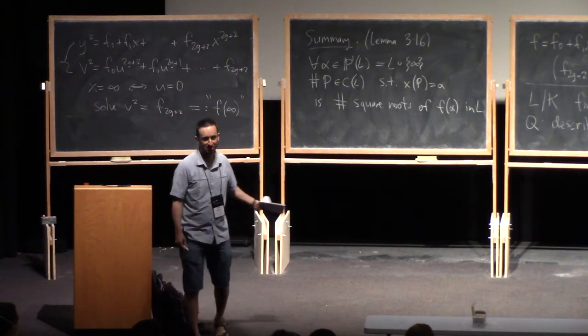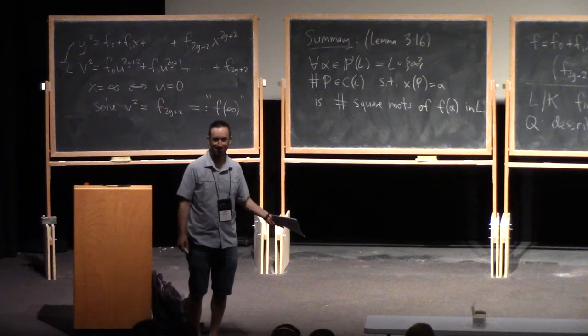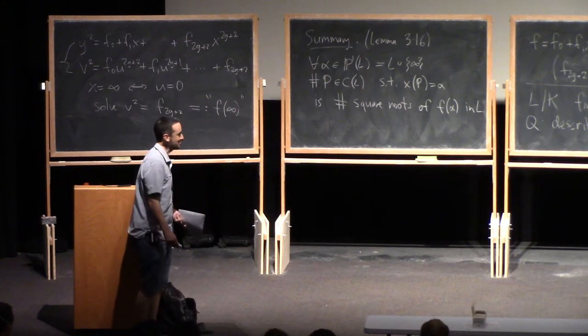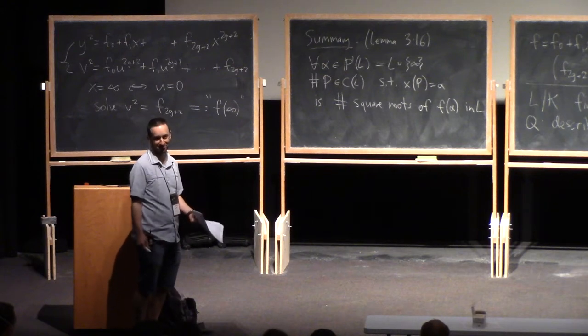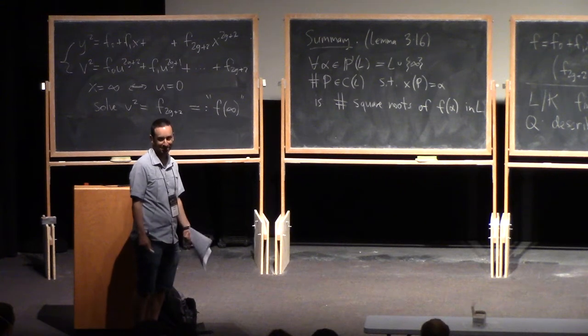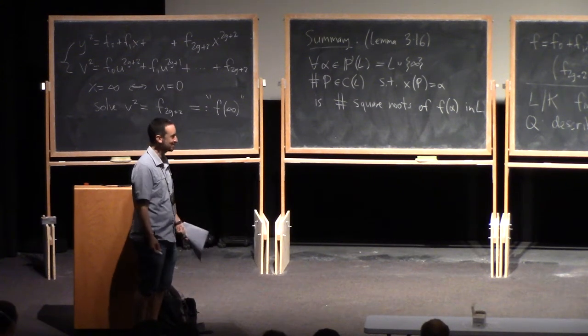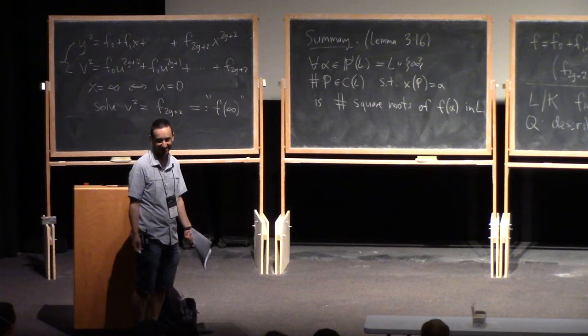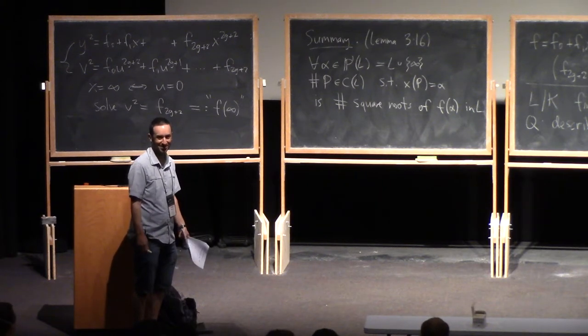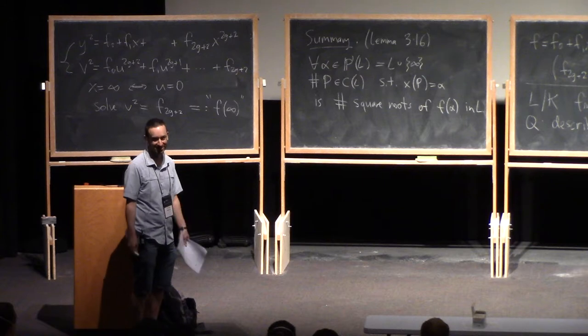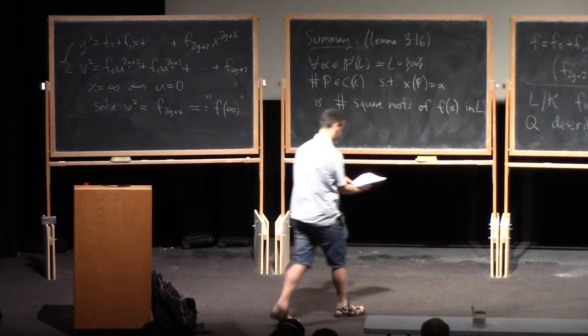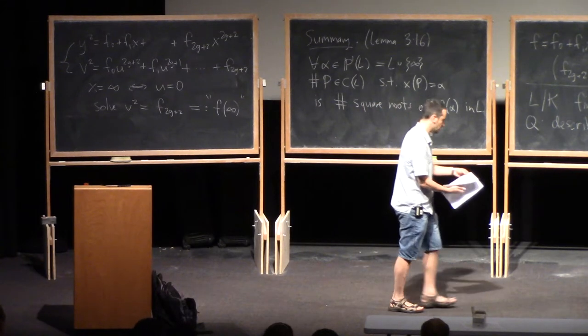I know some of you have already seen this, and I apologize for going into so much detail. The reason I'm doing it is when I first started studying point counting, Kedlaya's algorithm, this sort of thing, was all about hyperelliptic curves, and I had no idea about this description for a very long time. And once you know this description, everything is so much easier, but if you don't know it, it's impossible to understand what's going on. So I'm just feeling sorry for my younger self, trying to make amends.